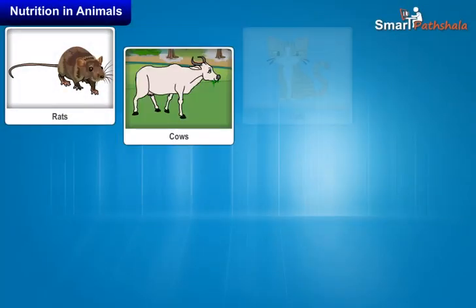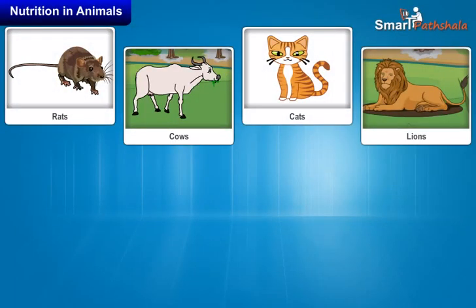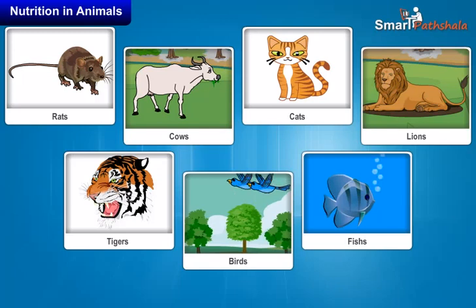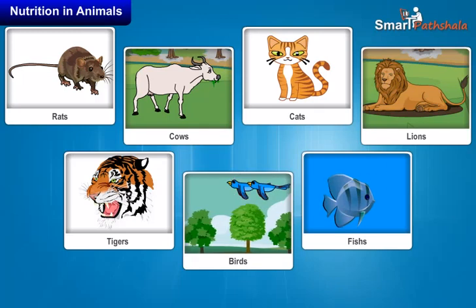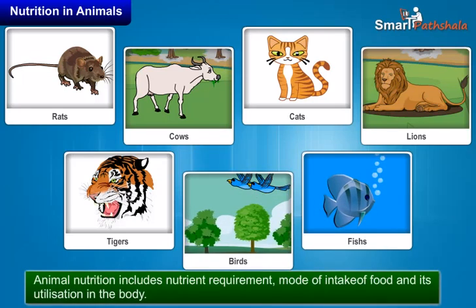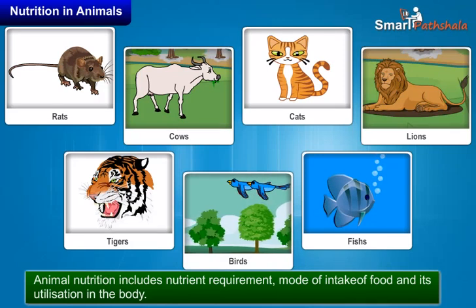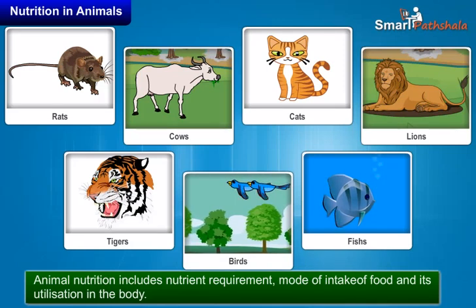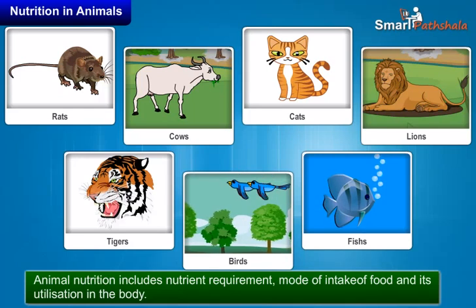All organisms require food for their growth, repair and functioning of the body. Animal nutrition includes nutrient requirement, mode of intake of food and its utilization in the body.